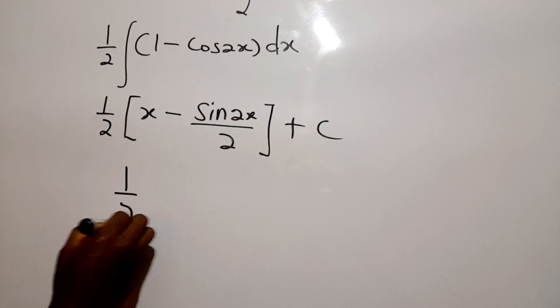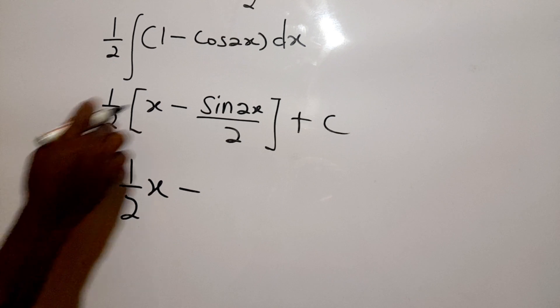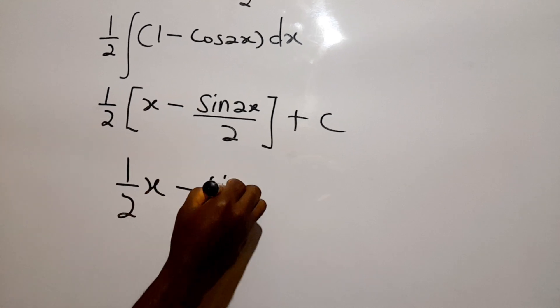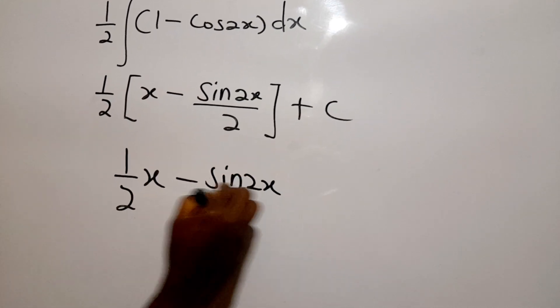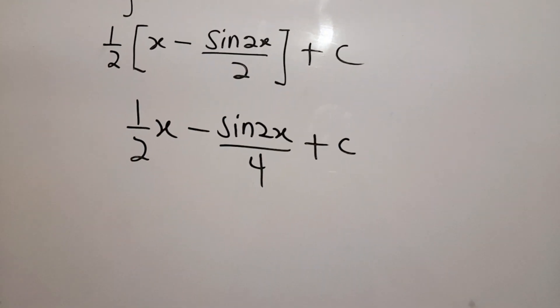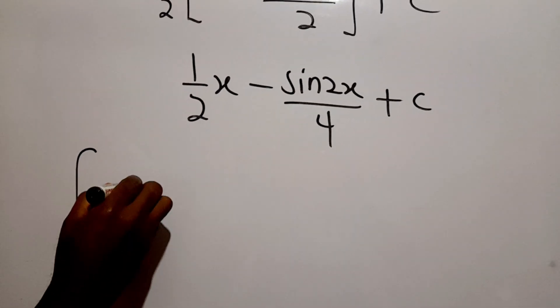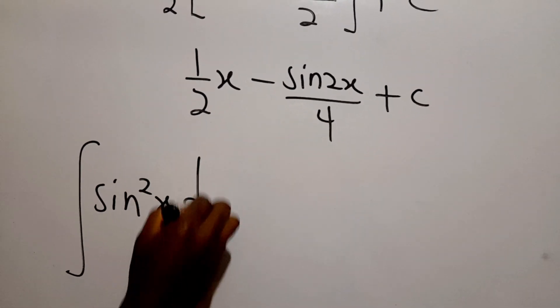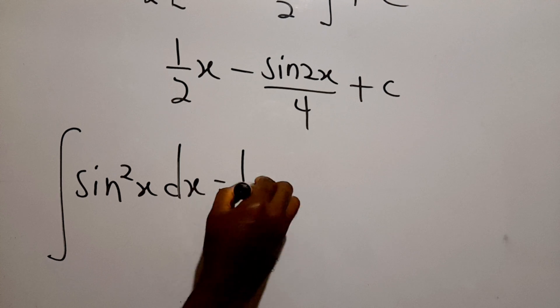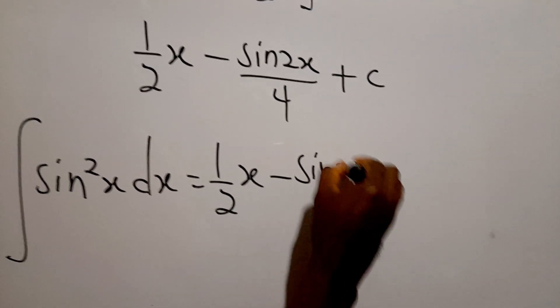Then plus our constant of integration. And we can now expand to get half x, when half multiply x, then when half multiply this we get sine 2x all over four plus C. So we can then conclude that the integral of sine squared x dx is equal to half x minus sine 2x over four plus our constant.